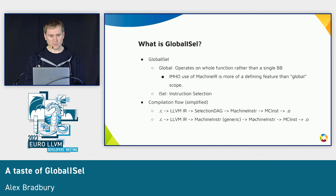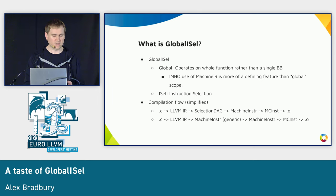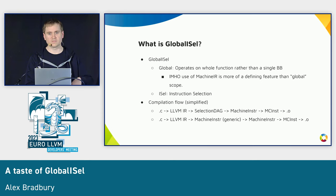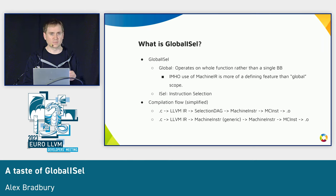In terms of what is Global ISel — in the most basic terms, breaking down the name: 'Global' refers to how it operates on the whole function rather than a single basic block. 'ISel' is instruction selection. In a traditional Selection DAG flow, you go from C to LLVM IR, which gets translated into Selection DAG, through a series of sub-passes, and eventually gets emitted as target-specific machine instructions. If you implement the MC layer, you can then emit it as, say, an ELF object file.